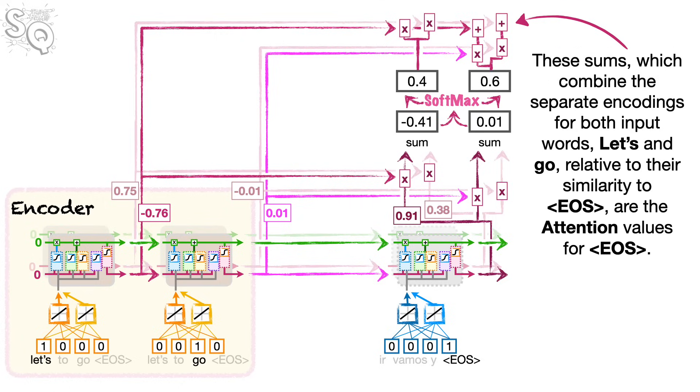And, lastly, we add the scaled values together. These sums, which combine the separate encodings for both input words, LETS, and GO, relative to their similarity to EOS, are the attention values for EOS. BAM!